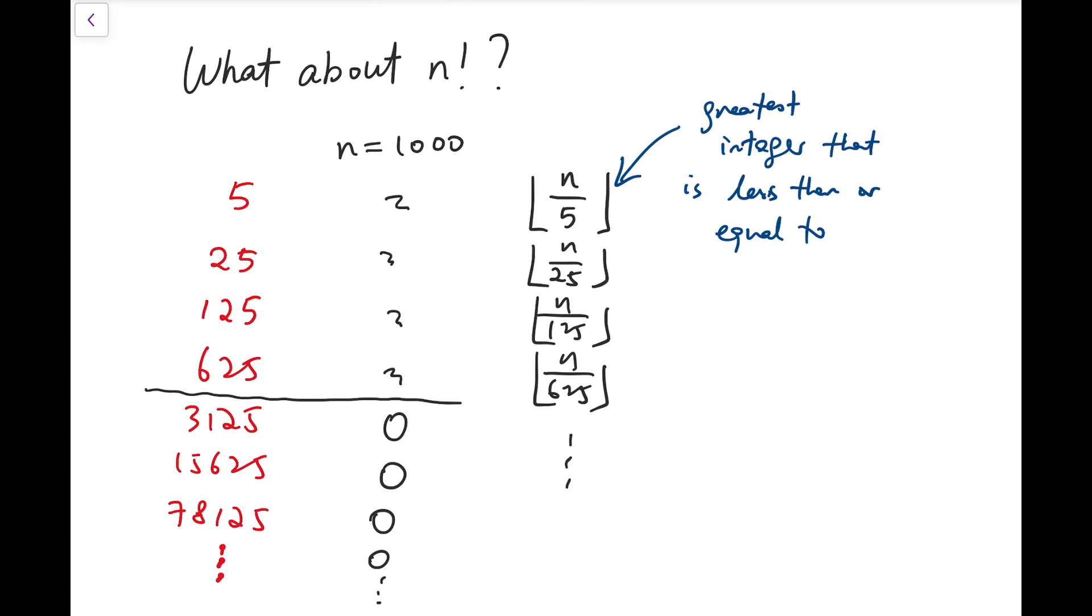It's just that if n is 1000, all such values under the floor function after divided by 625 and beyond are just zero. So we're not adding anything. But if n grows larger and larger, we have to consider more and more powers of 5.